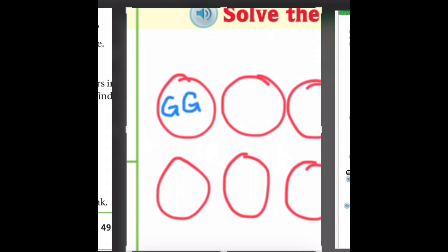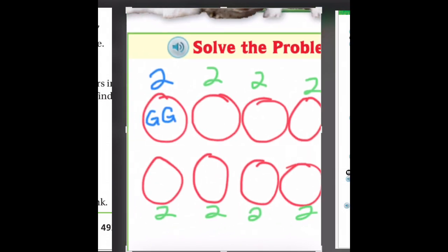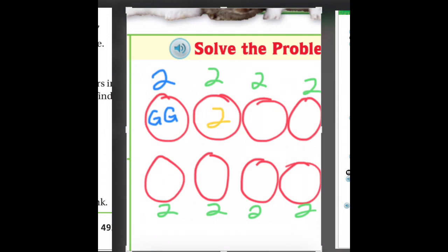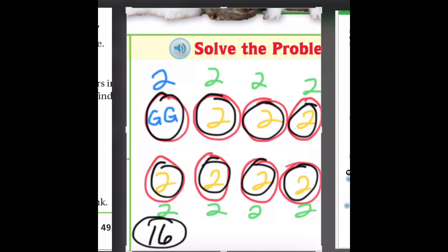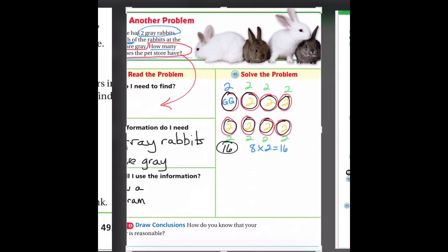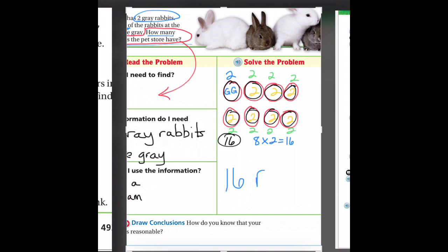Those two gray rabbits go in one group. Since I have a group of two here, the rest all need to be in groups of two. You can draw circles or just write the number two in each group. Now we can figure out how many rabbits there are: two, four, six, eight, ten, twelve, fourteen, sixteen rabbits total. Or using multiplication: eight groups of two equals 16. So 16 rabbits is our answer.